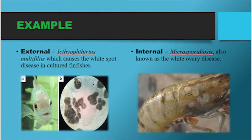Examples of ectoparasites include Ichthyophthirius multifiliis, which causes the white spot disease in fin fishes. This disease is a holotrichous ciliate with worldwide distribution and affects all freshwater fishes. A closely related organism is Cryptocaryon irritans, which affects marine fishes. An example of endoparasites is Microsporidiosis, caused by Microsporidia — also known as white ovary disease. Microsporidia are spore-forming unicellular parasites related to fungi, with more than 1,000 species described, mainly infecting invertebrates and fishes.